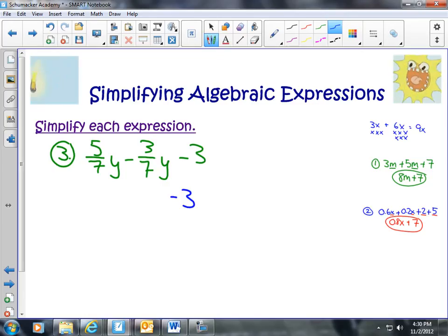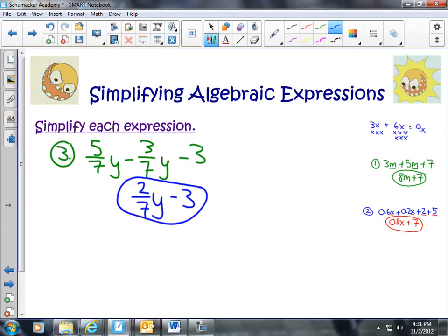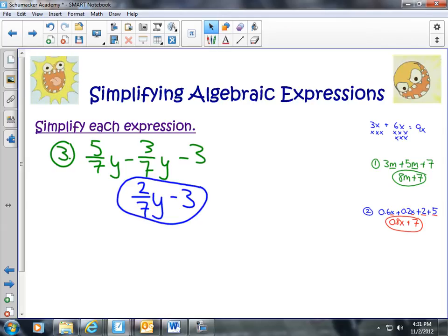And here, I'm going to not add, but I want to subtract like terms. You can do that as well. So 5 minus 3 is 2. So 2 sevenths. 2 sevenths what? 2 sevenths y. So I have 2 sevenths y minus 3.